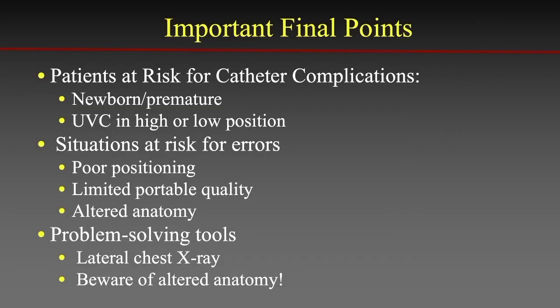The important final points: newborns and premature infants are at especially high risk for catheter complications, particularly with UV catheters. It is important to recognize situations that increase the risk of diagnostic errors, including poor patient positioning, limited x-ray quality, and altered patient anatomy. Consider using the lateral chest x-ray as a problem-solving tool and always be aware of altered or distorted anatomy.